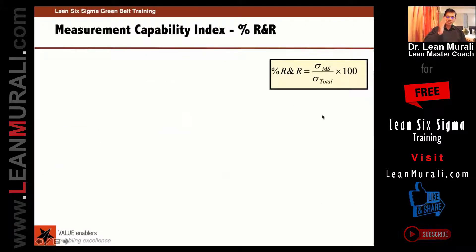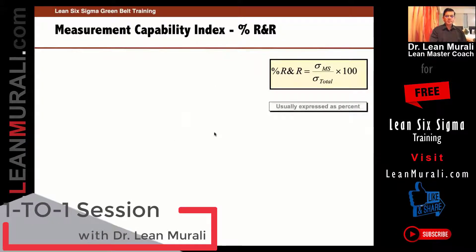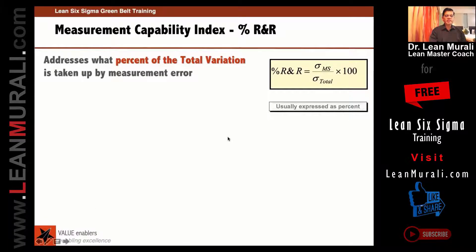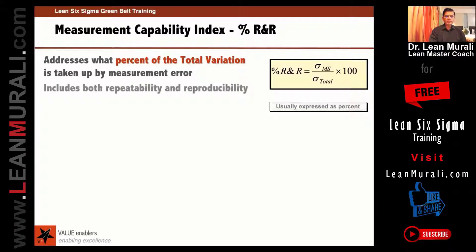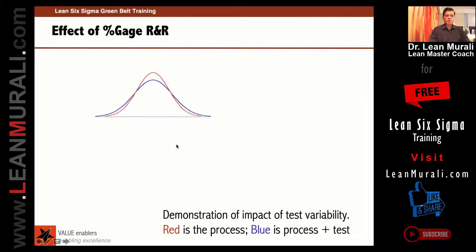Coming to gauge R&R — this is what we are going to actually calculate using an Excel sheet. I'll tell you the procedure and how to calculate it in the Excel sheet. This will address what percent of the total variation is taken up by the measurement error, and this is the formula for that.